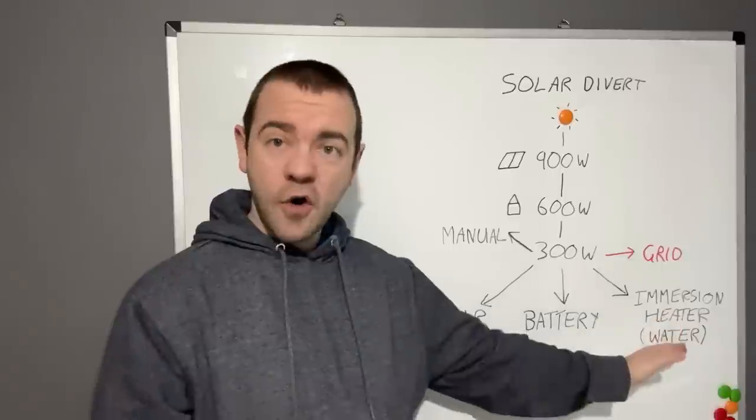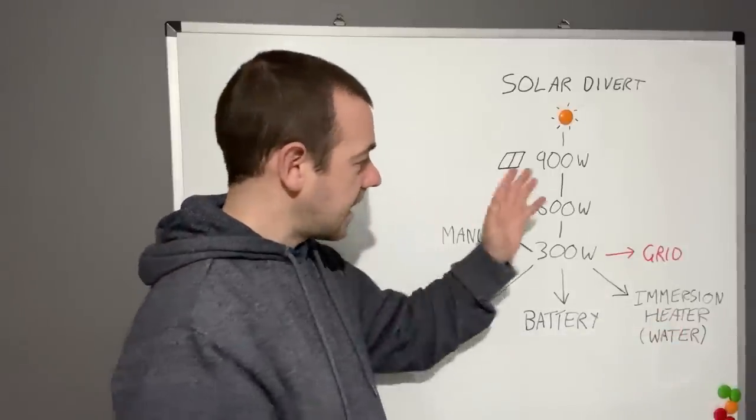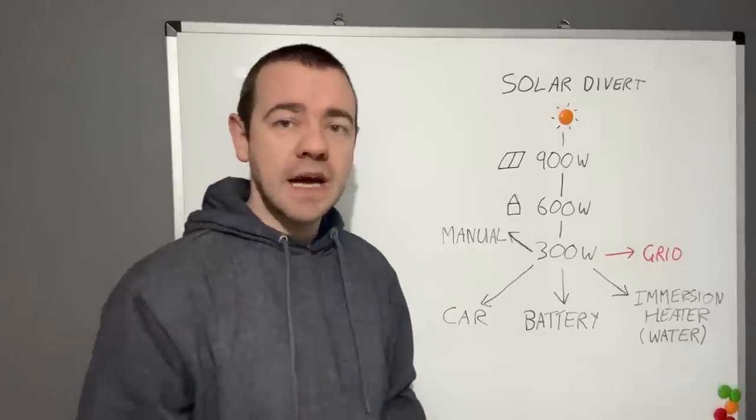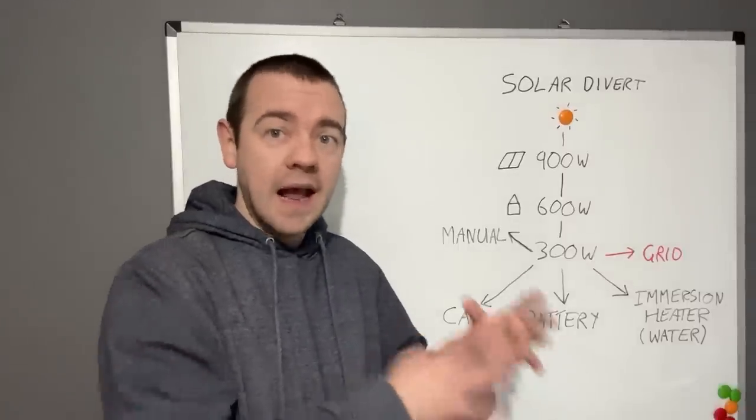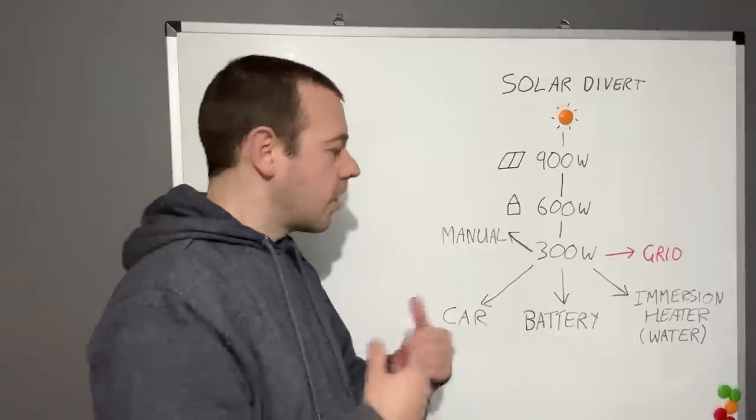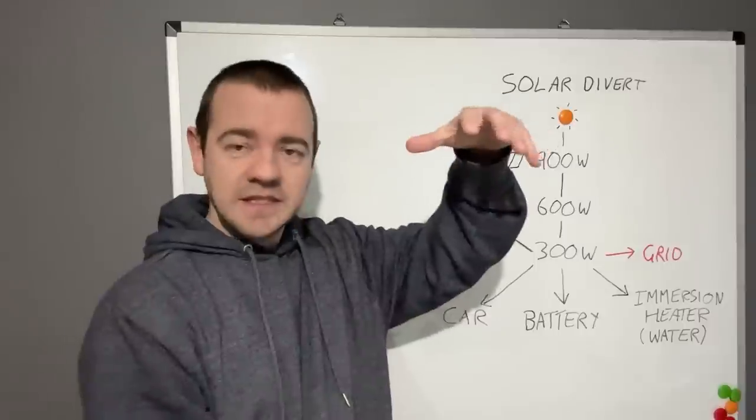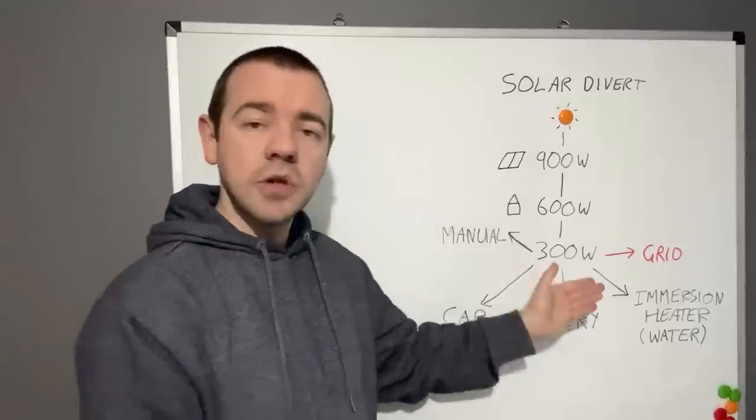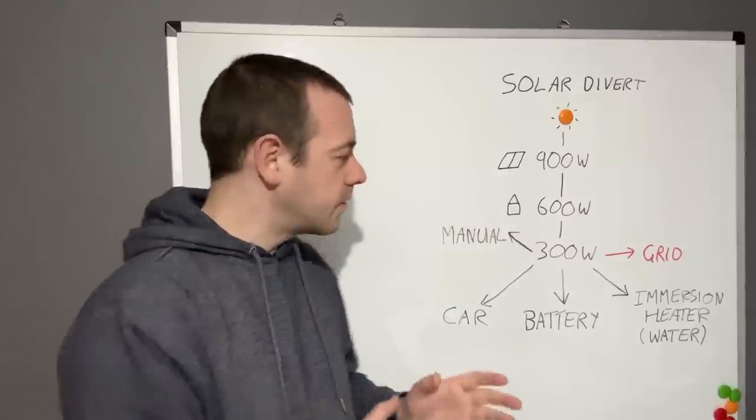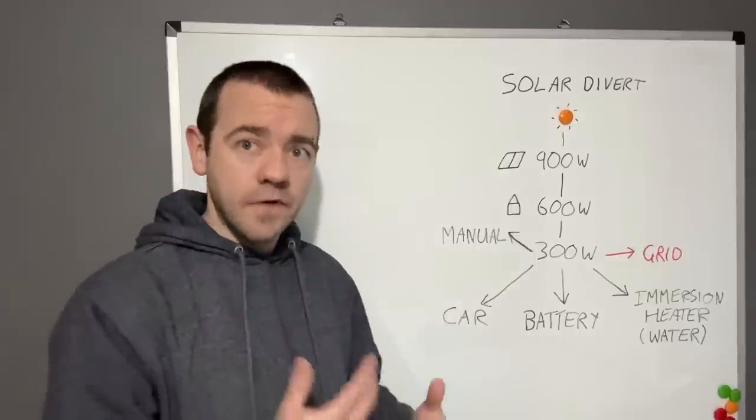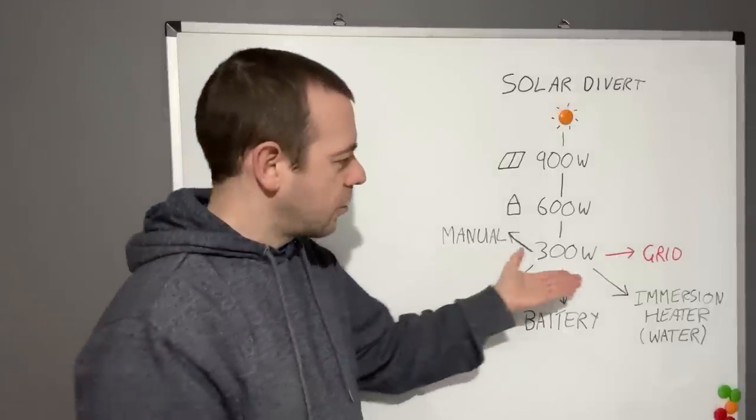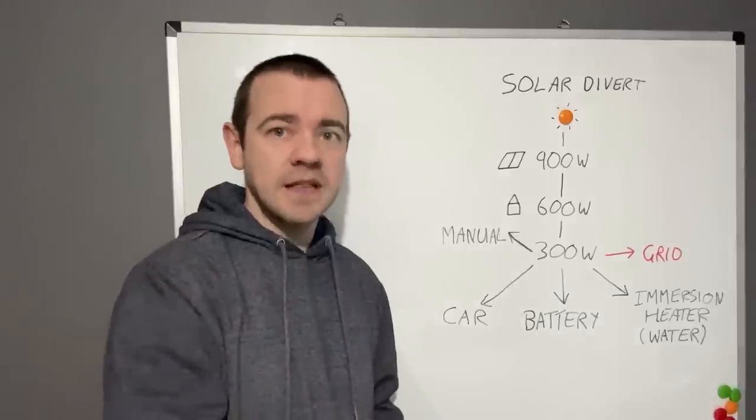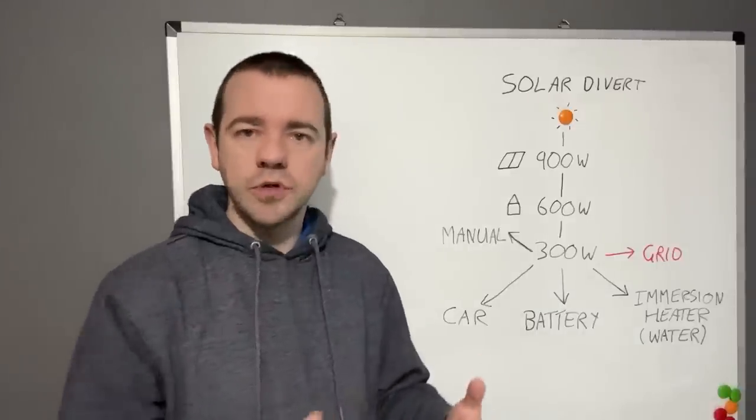Starting with this one, the immersion heater. Essentially, if you have a tank of water in your house—I have one because I have a heat pump, but a lot of people still have that tank of water that gets heated up maybe at night, for example—you can get solar divert options for them. These are probably on the cheaper side of the options. So what happens is that 300 watts will go into essentially a kettle inside that water tank and heat the water up.